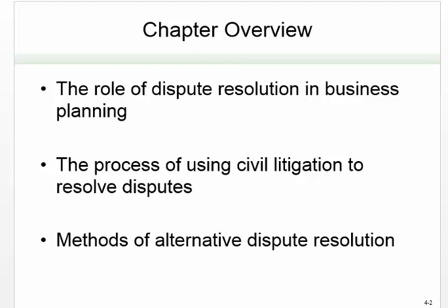Dispute resolution is imperfect in general. For businesses, choosing a dispute resolution process is really about cost, preserving relationships, formality, and privacy. Your textbook does a good job providing charts on this — specifically Table 4-1 on page 96 — giving you a good idea of what businesses face in choosing litigation versus a more informal dispute resolution process.